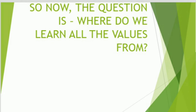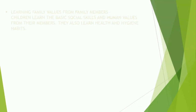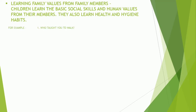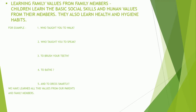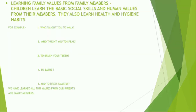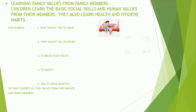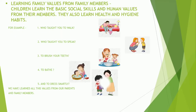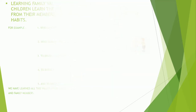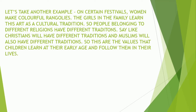So now the question is: where do we learn all the values from? The answer is that children learn the basic social skills and human values from their family members. They also learn health and hygiene habits. For example, who taught you to walk? Who taught you to speak? Who taught you to brush your teeth? Who taught you to bathe? And lastly, who taught you to dress smartly? From this, we can clearly understand that we have learned all the values from our parents and family members.